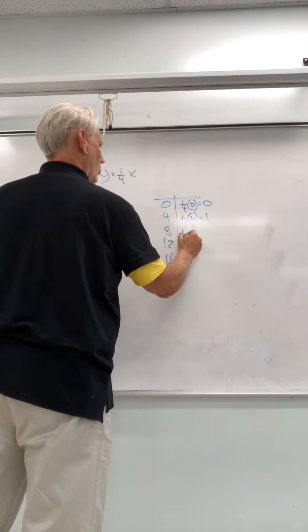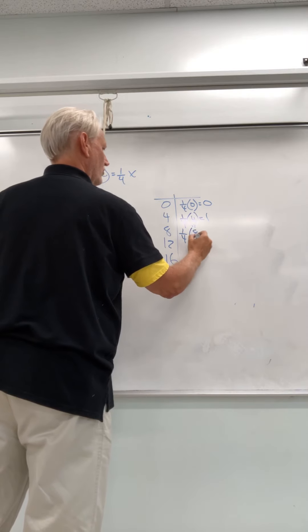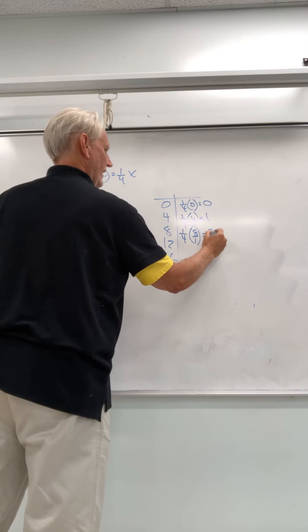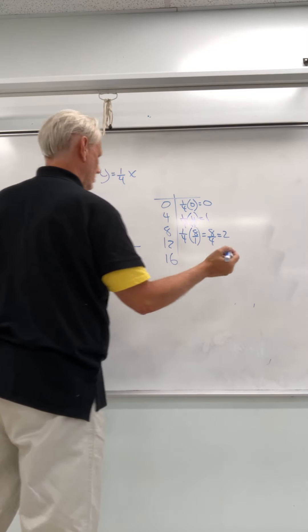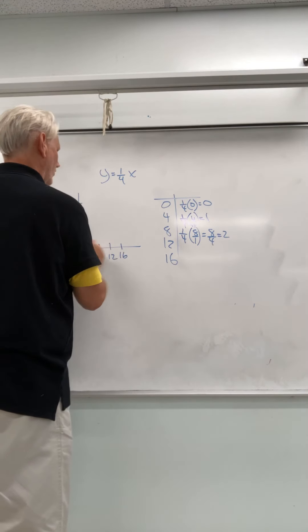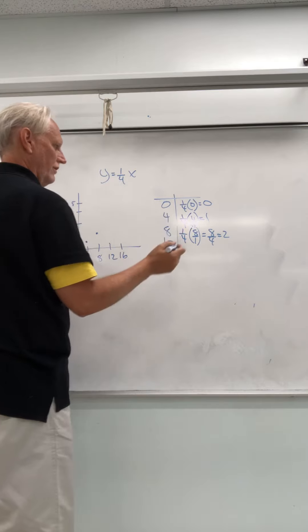Then we're going to do 1 fourth times 8 over 1. We're going to get 8 over 4, and that's going to equal 2. So we go over 4, over 8, up 2. That's our point.